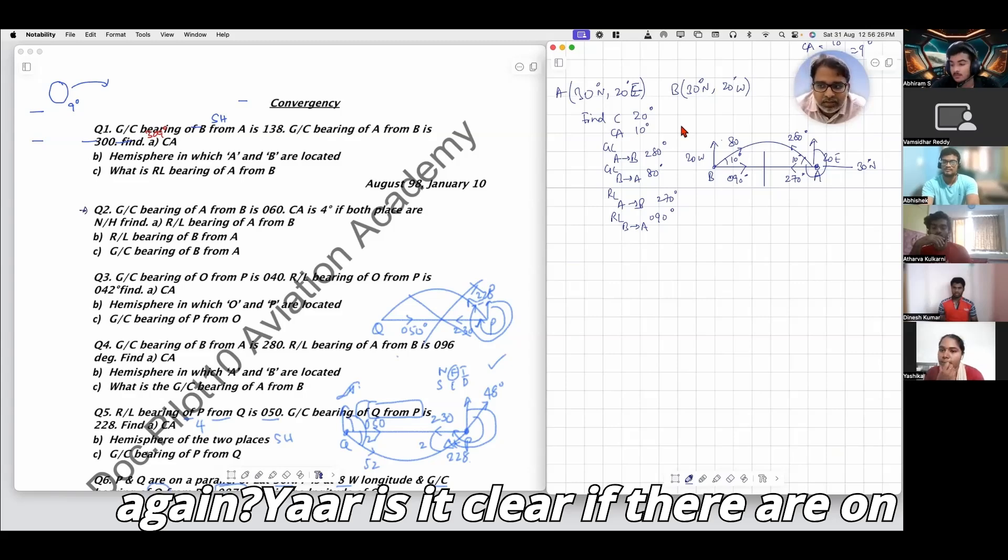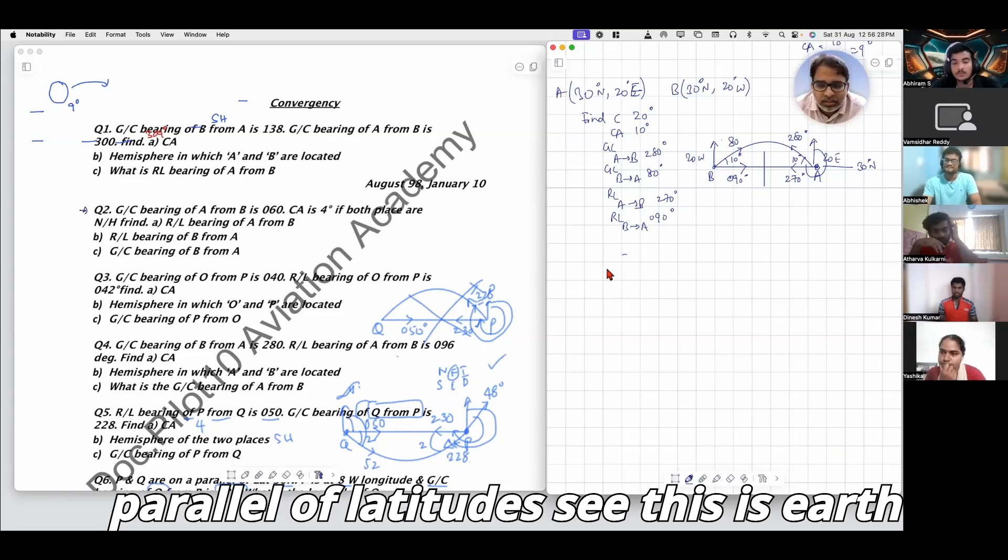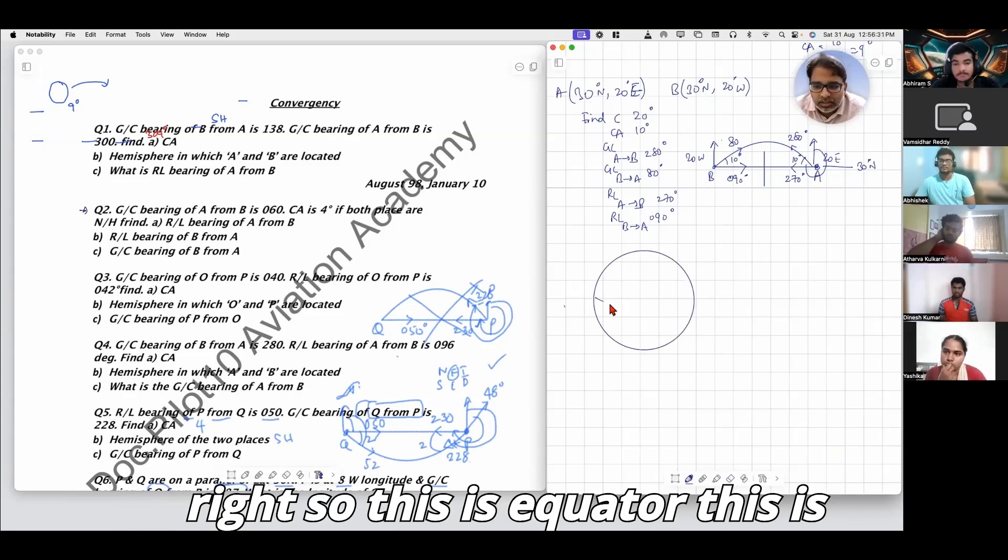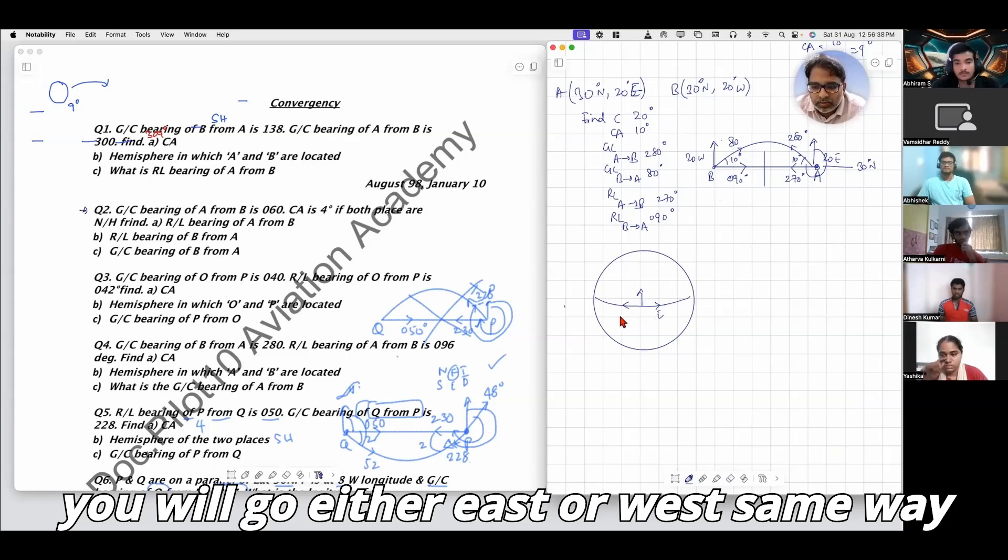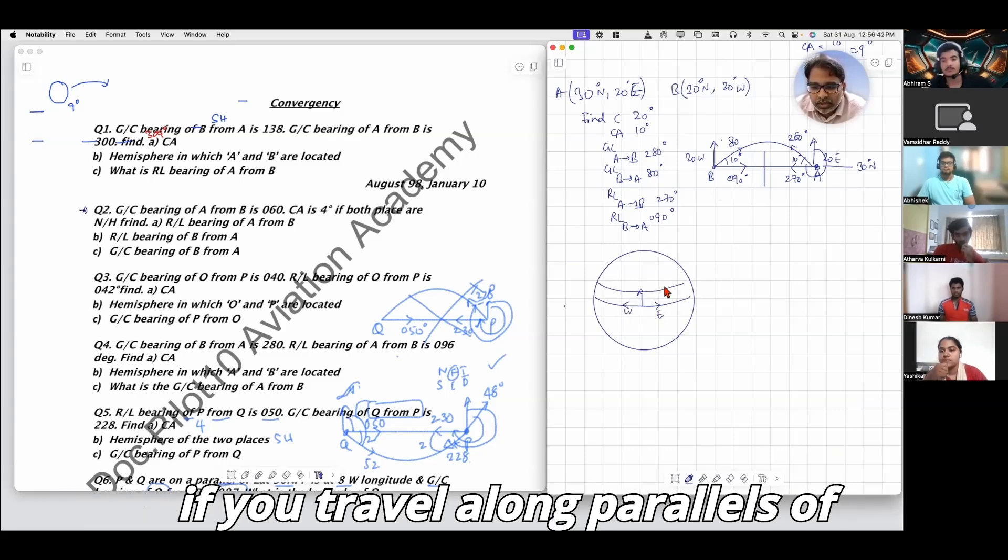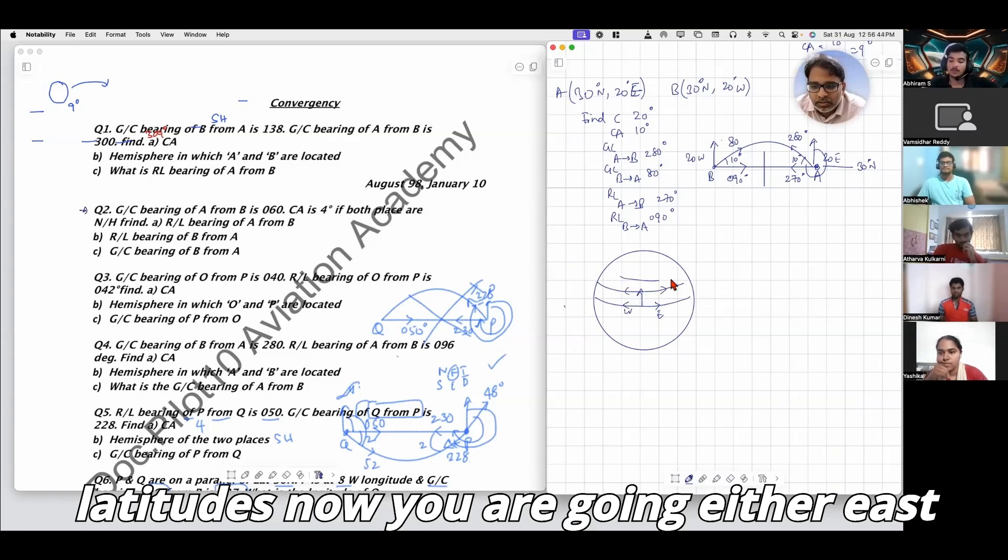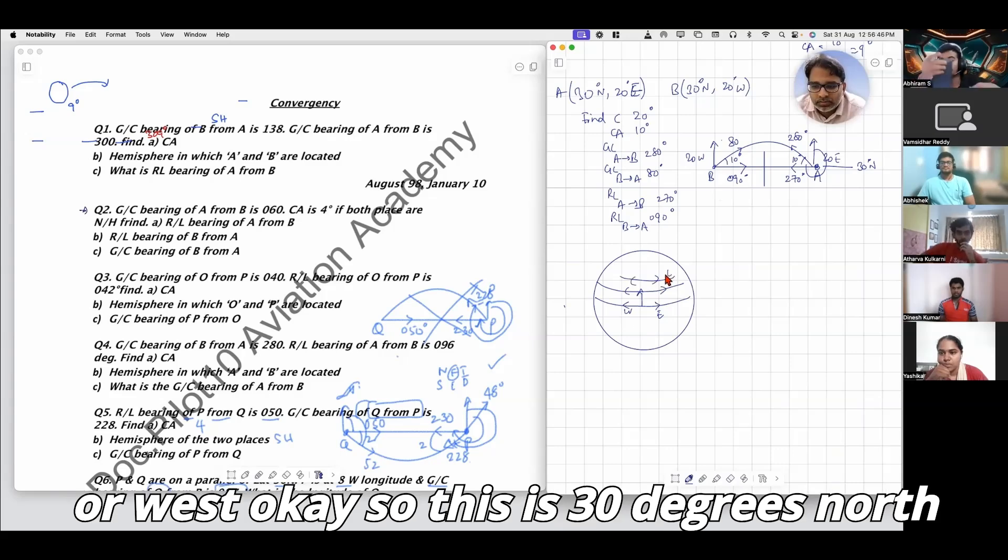This is Earth, right? This is the equator, this is north. If you go along the equator, you go either east or west. Same way, if you travel along parallels of latitude, you're going either east or west.